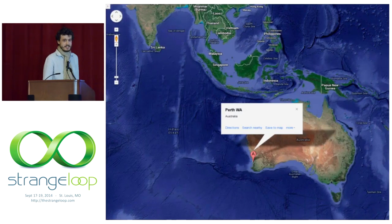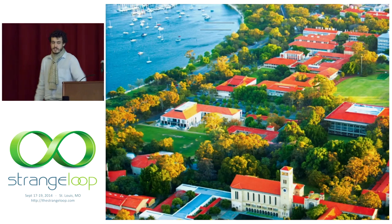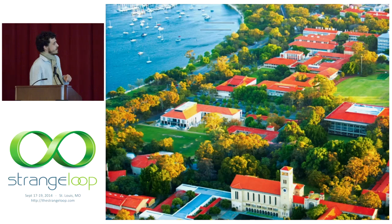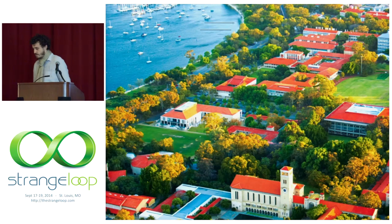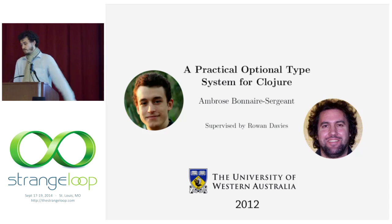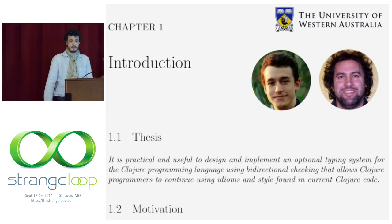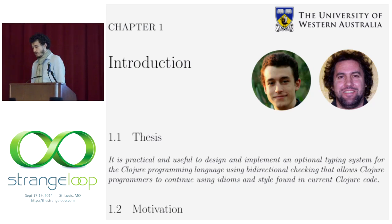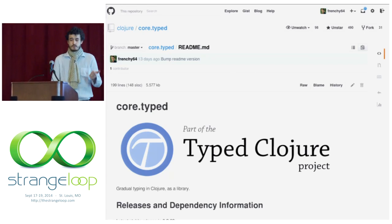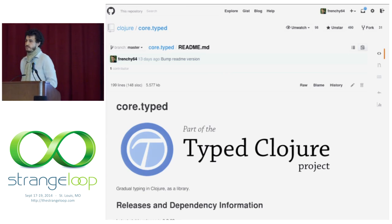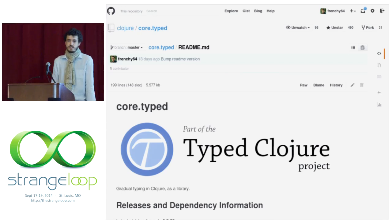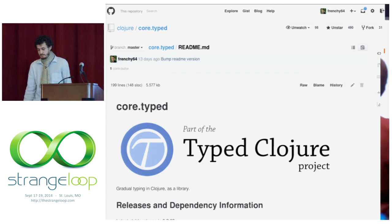I was basically asking closure programmers what problems they were having with closure and what kinds of tools they wanted to see. The idea of static typing kept coming up. Back I flew to Perth — the University of Western Australia — where I was writing type closure with Rowan Davies. My thesis was that type closure is both practical and useful. That was in 2012, and the main product was the implementation called core type.